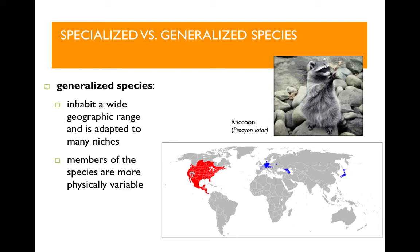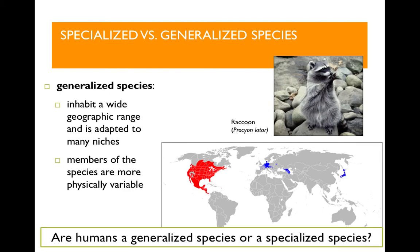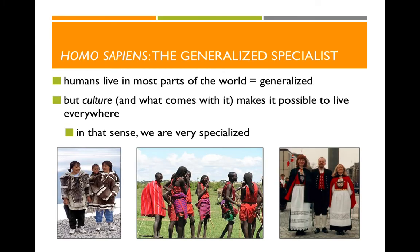So given these two categories of specialized and generalized species, what are humans? Are we generalized or specialized? Well, it's pretty obvious that we're generalized — humans live all over the world, we adapt to all these different environments, and we look different from place to place. However, we have one very specific adaptation that makes it possible for us to live around the world, and that is culture. Culture is where we're also a bit of a specialist. Culture lets us live in New York in the winter, gives us our clothing and homes, gives us food through farming. Culture is what has allowed humans to diversify around the world. So we are, in fact, a bit of both — generalized and specialized.